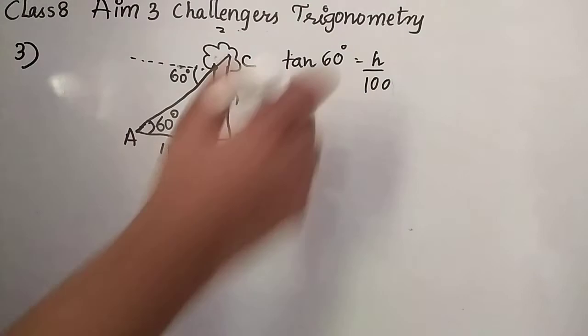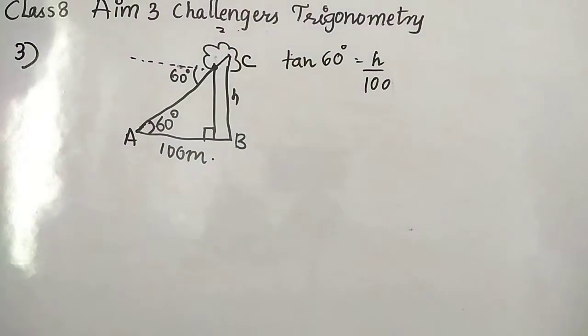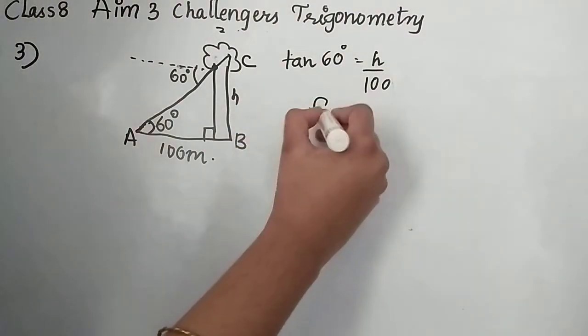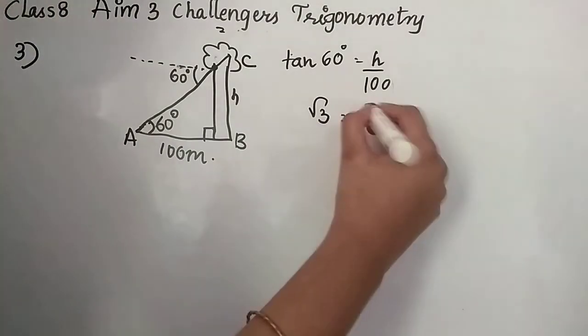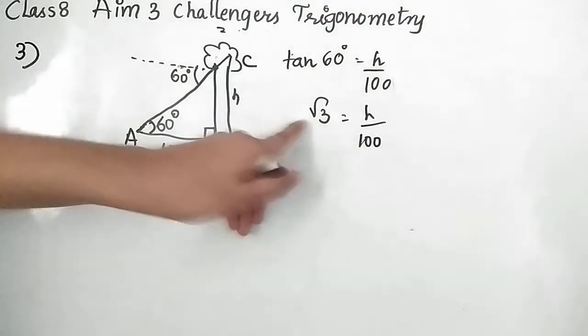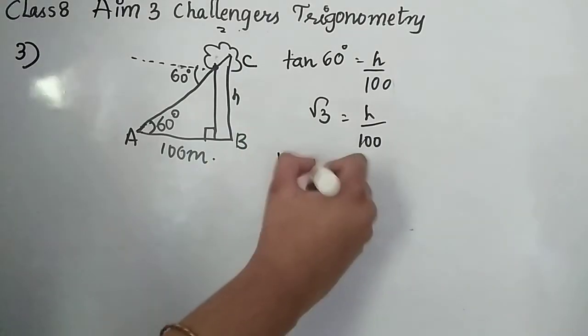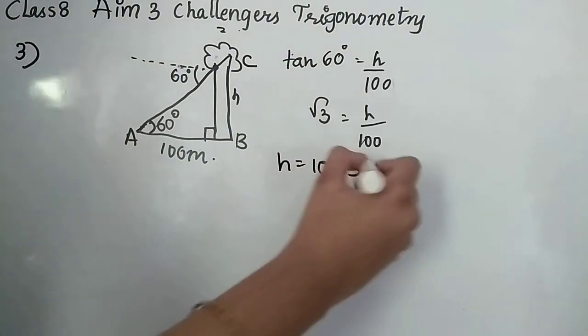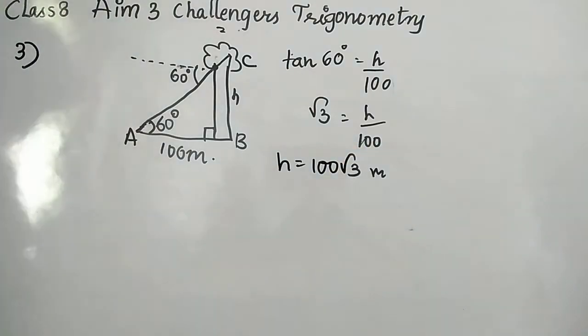Now tan 60 is nothing but root 3. H, we don't know. We have to find. By 100. Now when you send this LHS it becomes h is equal to 100 root 3 meters. Let's sit over.